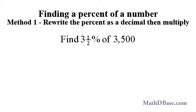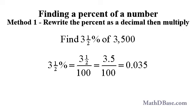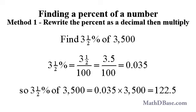For example, to find 3.5% of 3,500, rewrite 3.5% as 3.5 over 100, which is the same as 0.035, moving the decimal point two places to the left. So 3.5% of 3,500 will be equal to 0.035 times 3,500, or 122.5.